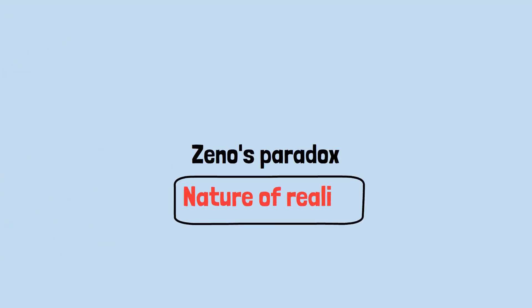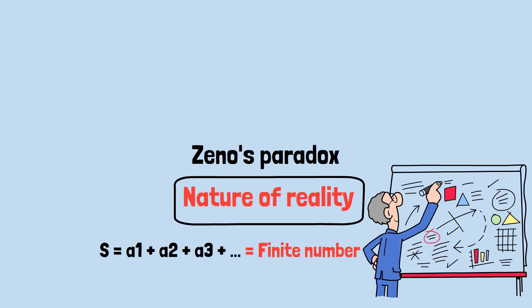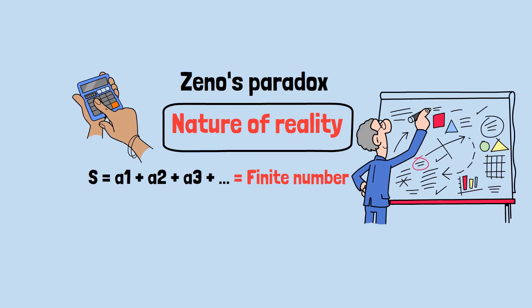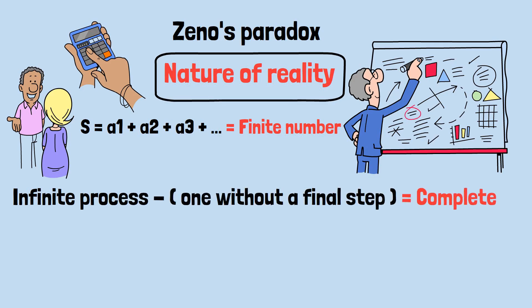On one hand, our mathematical analysis clearly shows that infinite processes can have finite outcomes. The math works perfectly and it matches our everyday experience. But on the other hand, we're claiming that an infinite process, one without a final step, can somehow be completed. How can something without an end actually finish?